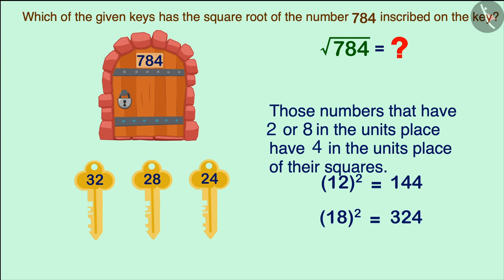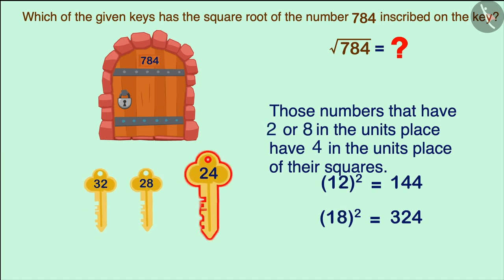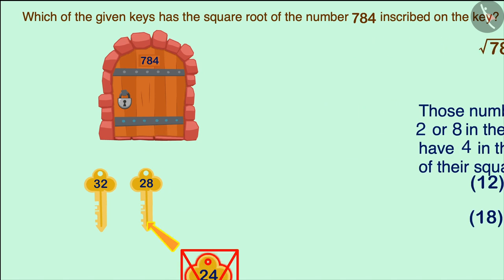This means that the square root of 784 will be any one of the numbers that have 2 or 8 in their units place. Thus, the key with the number 24 will also not open this lock.